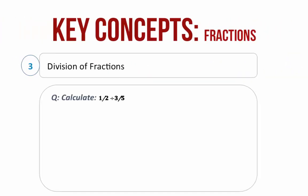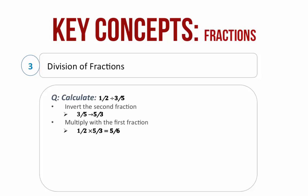Division of fractions. Let us take an example: 1 by 2 divided by 3 by 5. We invert the second fraction, that is 3 by 5 becomes 5 by 3, and then we multiply it by the first fraction. So 1 by 2 into 5 by 3 is equal to 5 by 6.